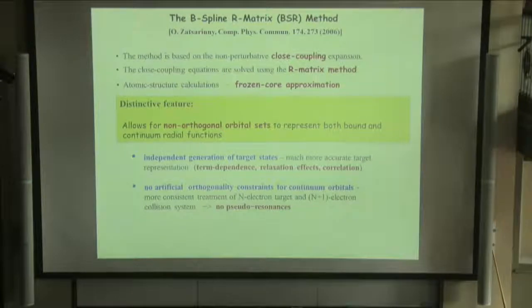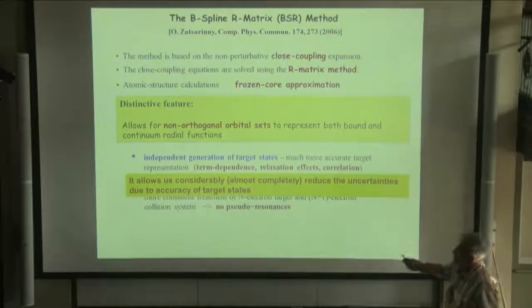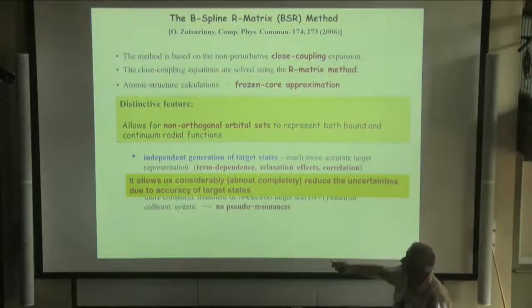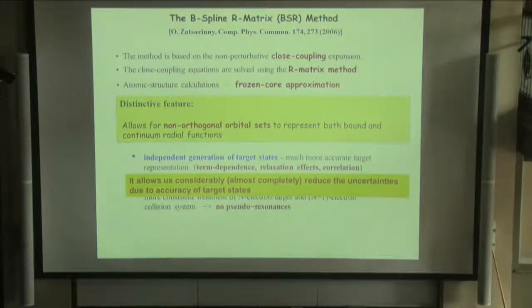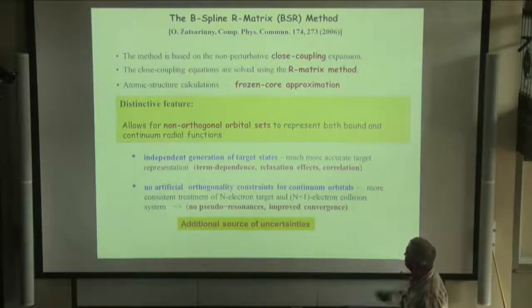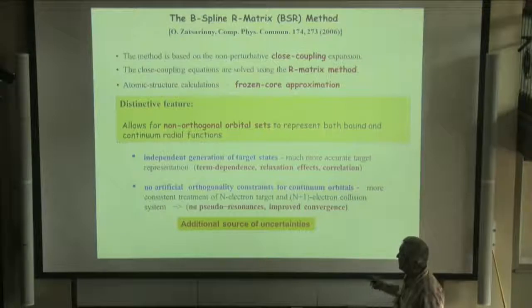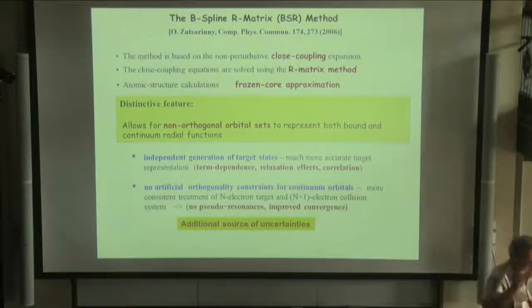We believe that these features allow us to reduce the uncertainty related to the accuracy of target states. Another possibility and advantage is that knowledge of continuum states is constrained, so we provide more consistent treatment of n-electron target and n+1 electron collision system - no pseudo-resonances and improved convergence. It is rather a general statement, so I provide a few examples to illustrate the statement.